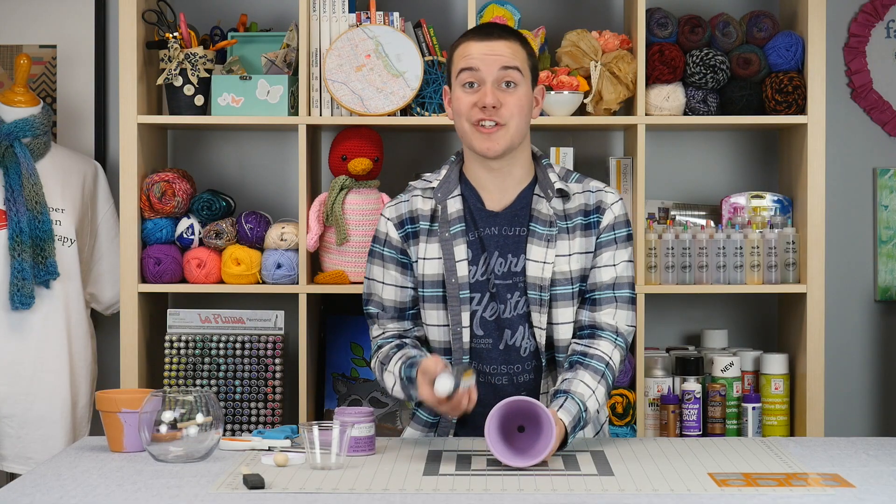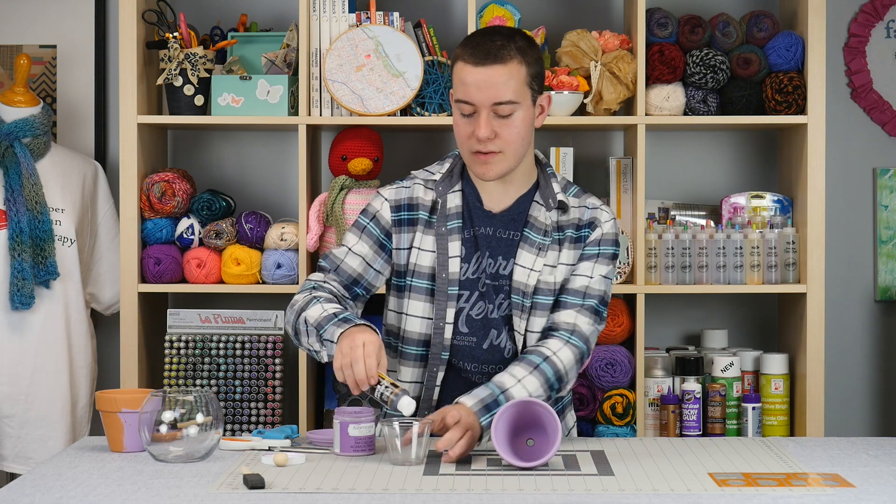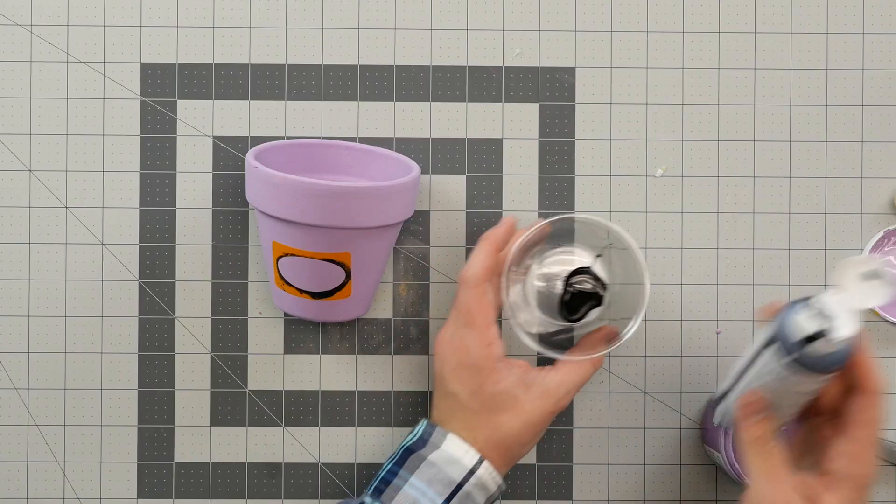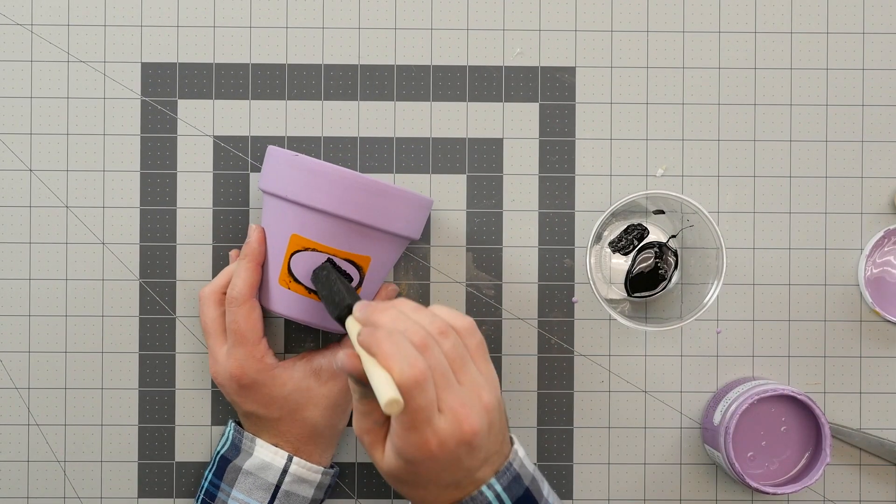Now you want to grab your Americana chalkboard paint and put it into a container just like so. And now we're gonna grab a foam brush and do a dabbing effect onto here just like this.